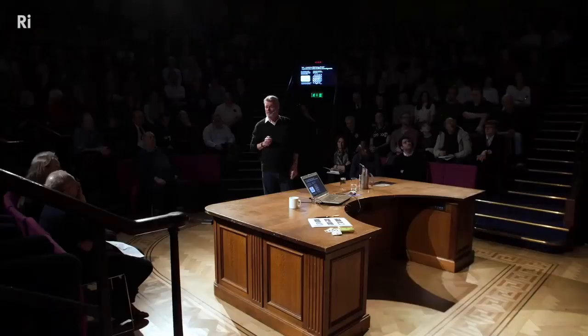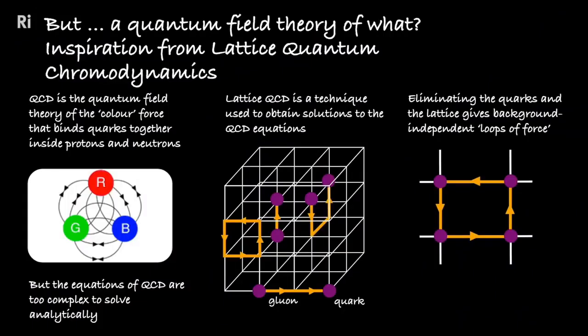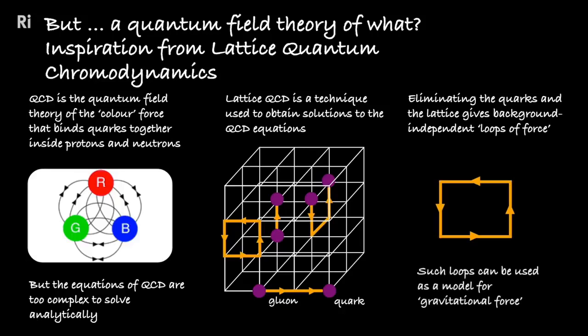So here's a thought. Physicist Kenneth Wilson had the idea of creating an analytical structure for quantum chromodynamics, wondering if it might be possible to do without the quarks and the lattice — leaving only the loops: loops of force running around in a circle. And this was the inspiration for loop quantum gravity, except the loops are not gluons — they're loops of gravitational force.